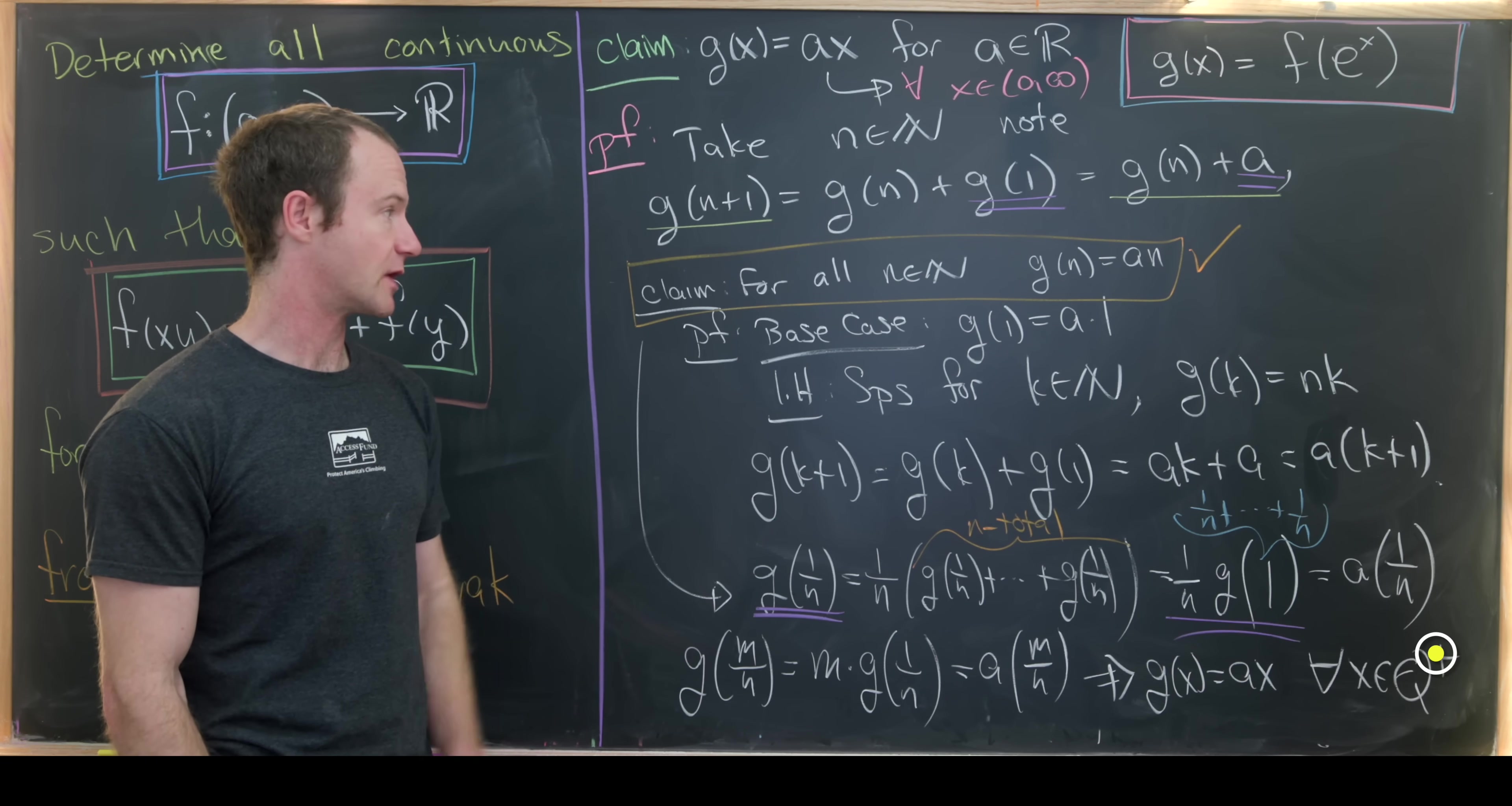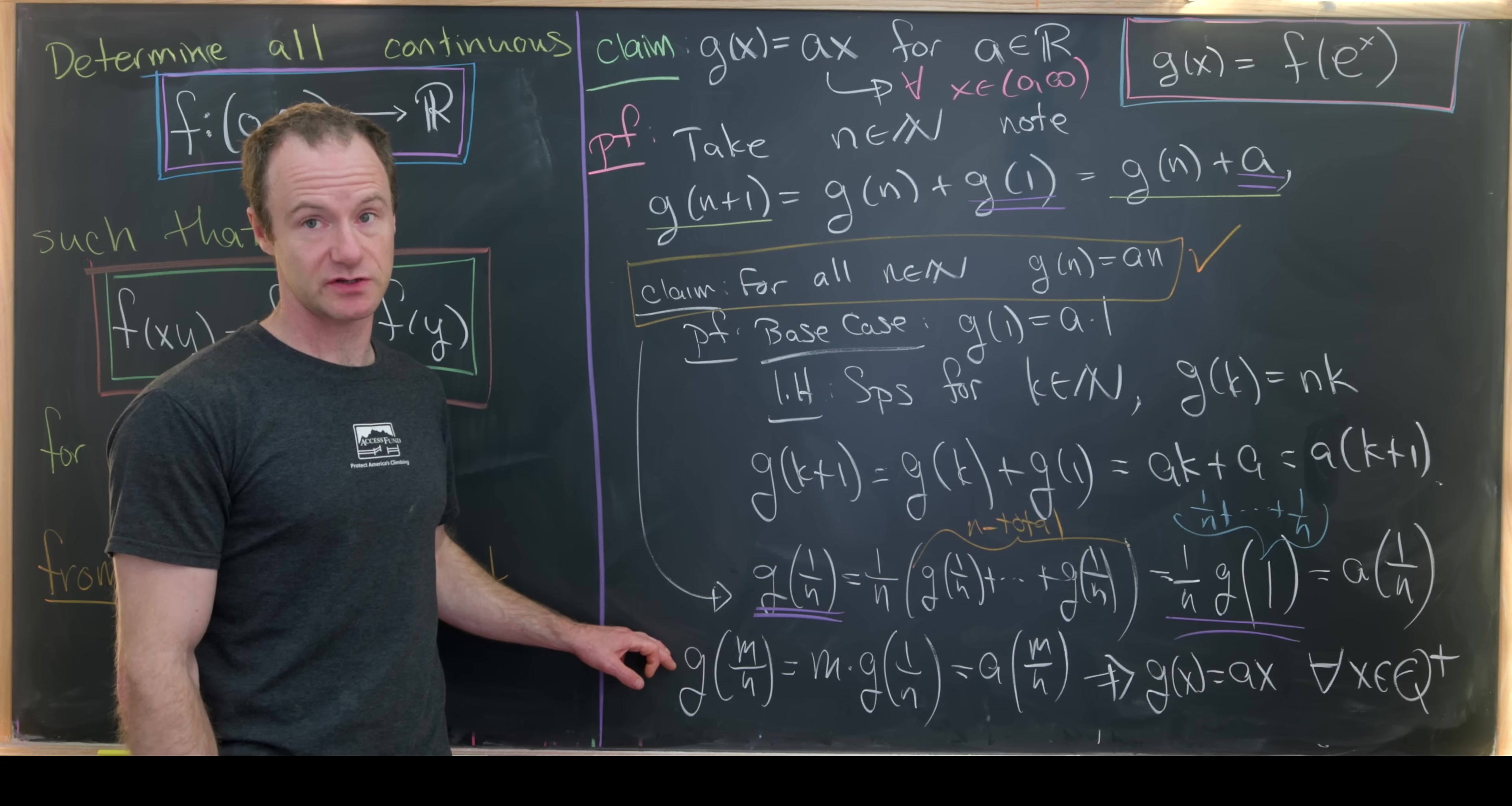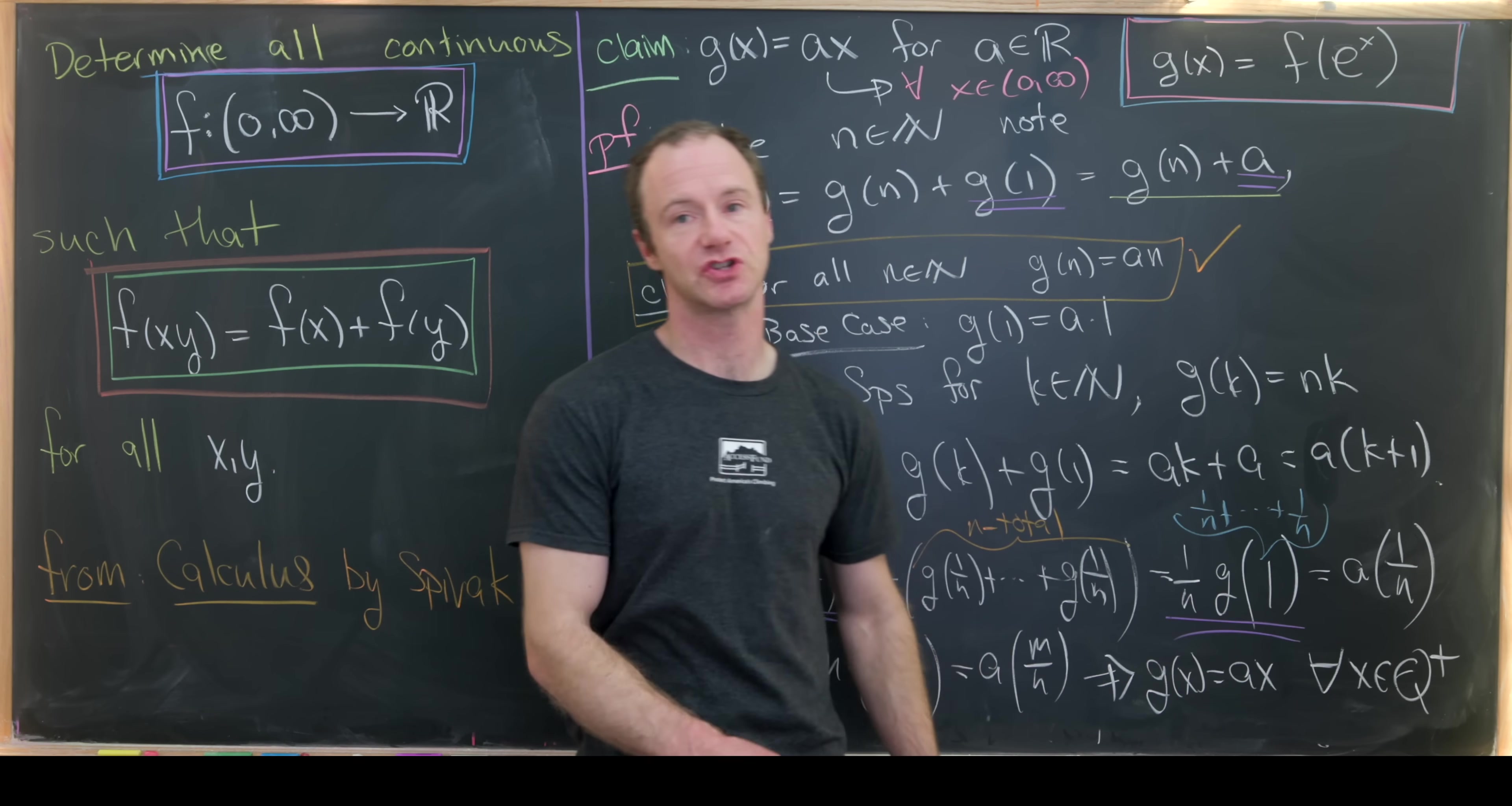So just to reiterate what our steps were, we proved that this sort of rule right here gave us the right form for our function on natural numbers. Then we expanded that to reciprocals of rational numbers. That was quickly expanded to all rational numbers. All of that came just from our additive rule. And then continuity brought us to all positive real numbers. Okay, so now that we've proven this claim, it's a short step to get an idea of what this function is. So let's do that.